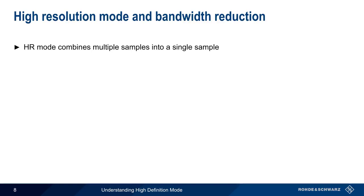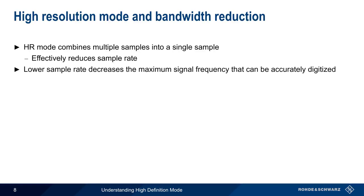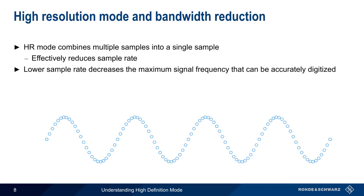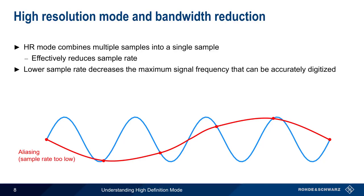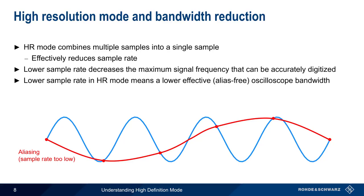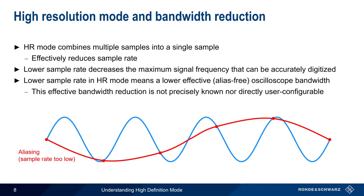There is, however, one drawback to high-resolution mode. Because high-resolution mode combines multiple samples into a single sample, it effectively reduces the sample rate. This lower sample rate then decreases the maximum signal frequency that can be accurately digitized. For example, a sufficiently high sampling rate allows the scope to accurately digitize an input signal, but if too low a sample rate were used, the result would be an aliased waveform. Therefore, the lower effective sample rate in high-resolution mode will reduce the alias-free bandwidth of an oscilloscope. Keep in mind that the effective reduction in bandwidth in high-resolution mode is neither precisely known nor directly user configurable.